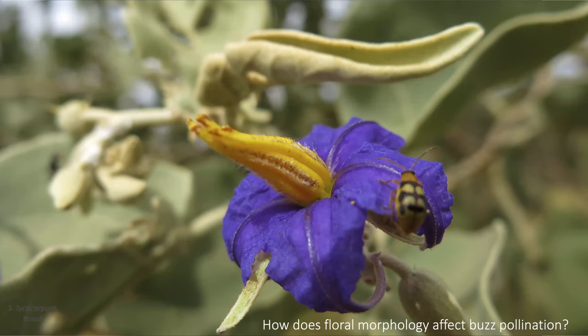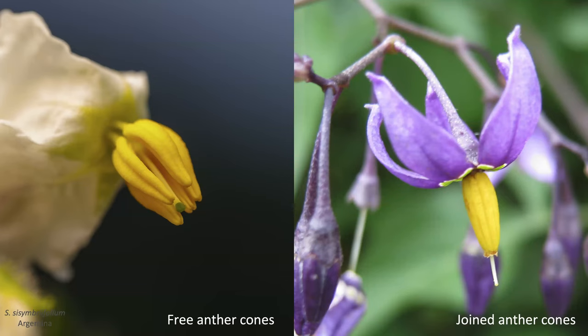Now that I've given background on the system and buzz pollination, I want to address the question we tackled in this study: how does floral morphology affect this type of pollination? I want to focus on one component of floral morphology familiar to all of you — the cone-shaped structure in the center of Solanum flowers. If you look at buzz-pollinated Solanum, they all produce this bright yellow aggregation of stamens in the center, but the architecture of the stamens — how they come together — varies.